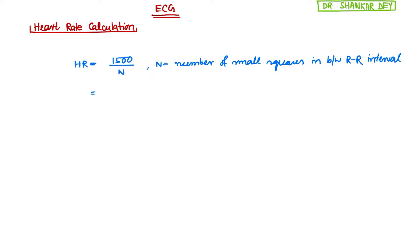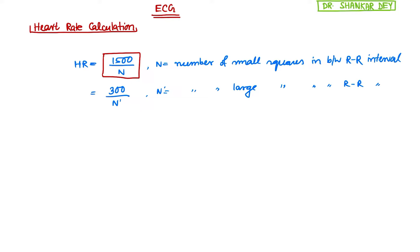Alternatively, you can also use the formula 300 / N', where N' equals the number of large squares between two R waves or the RR interval. So either you can calculate the heart rate using the number of small squares — formula: 1500 / N — or using the number of large squares — formula: 300 / N'.